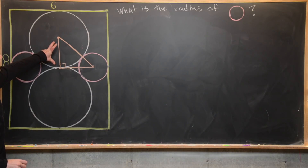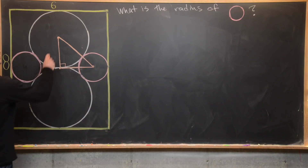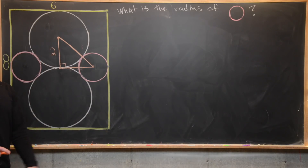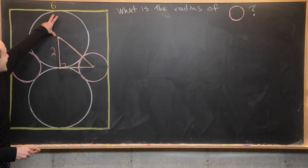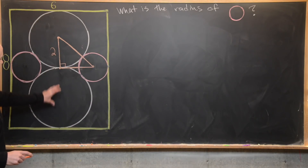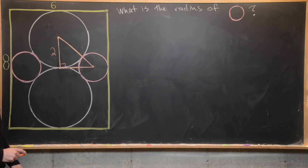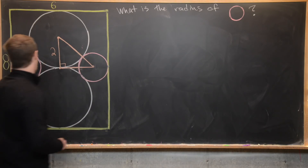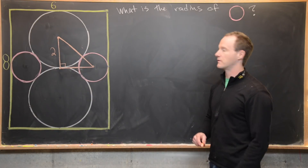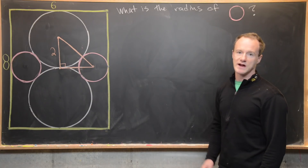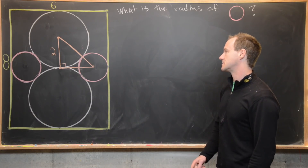Let's start with the easy side first. We know this radius will be 2. That makes the diameter of each white circle 4, and since we've got two identical white circles stacked on top of each other, both need diameter 4 to add up to the total height of 8. So the radius of the white circle is 2.